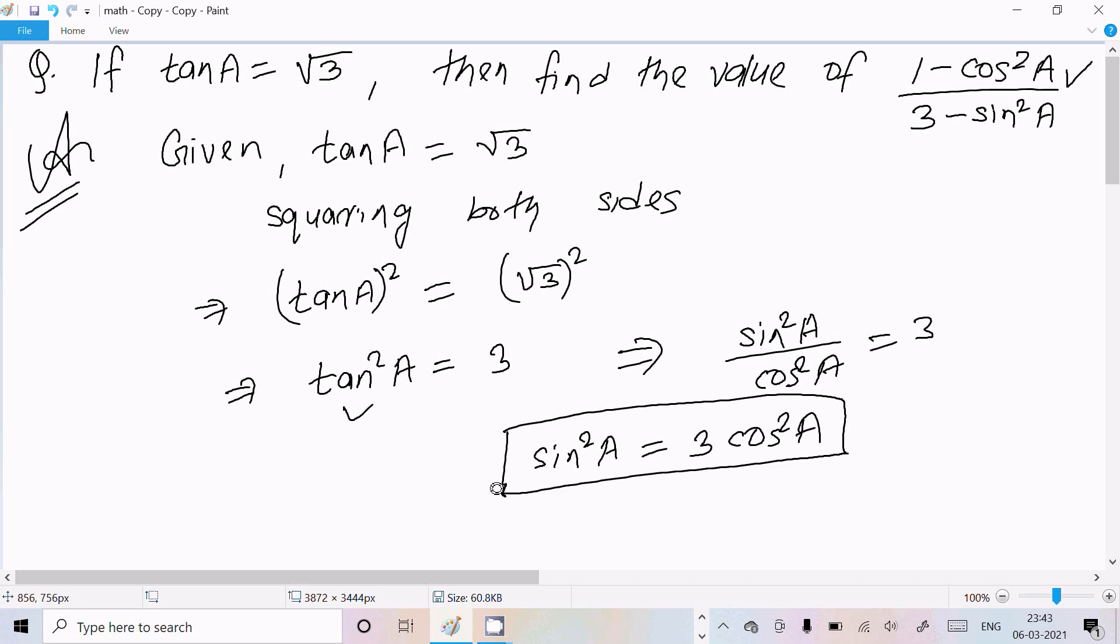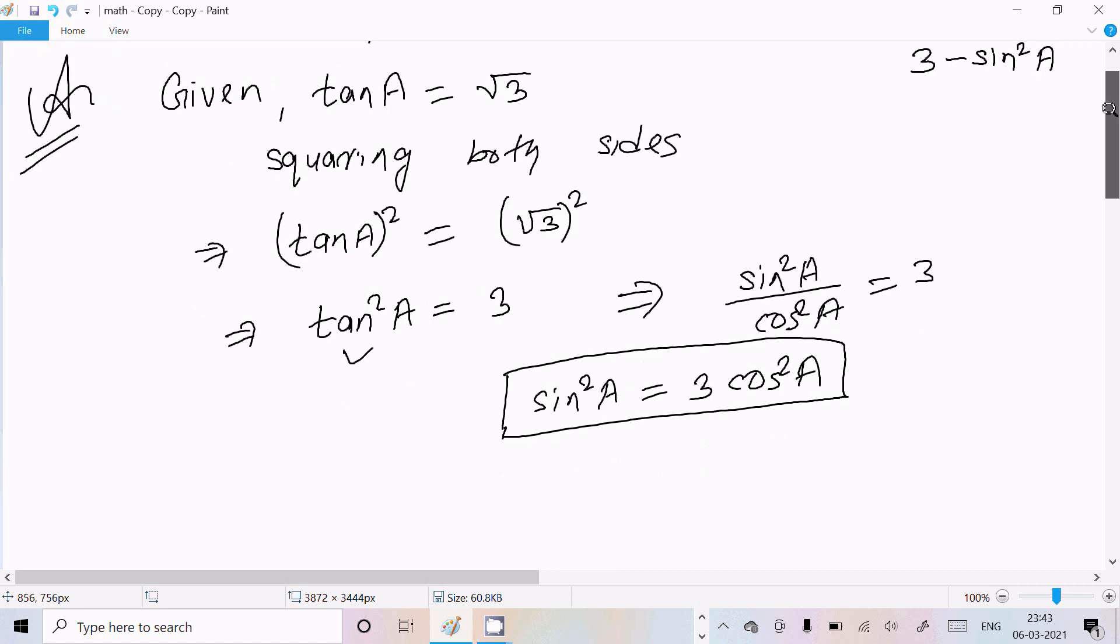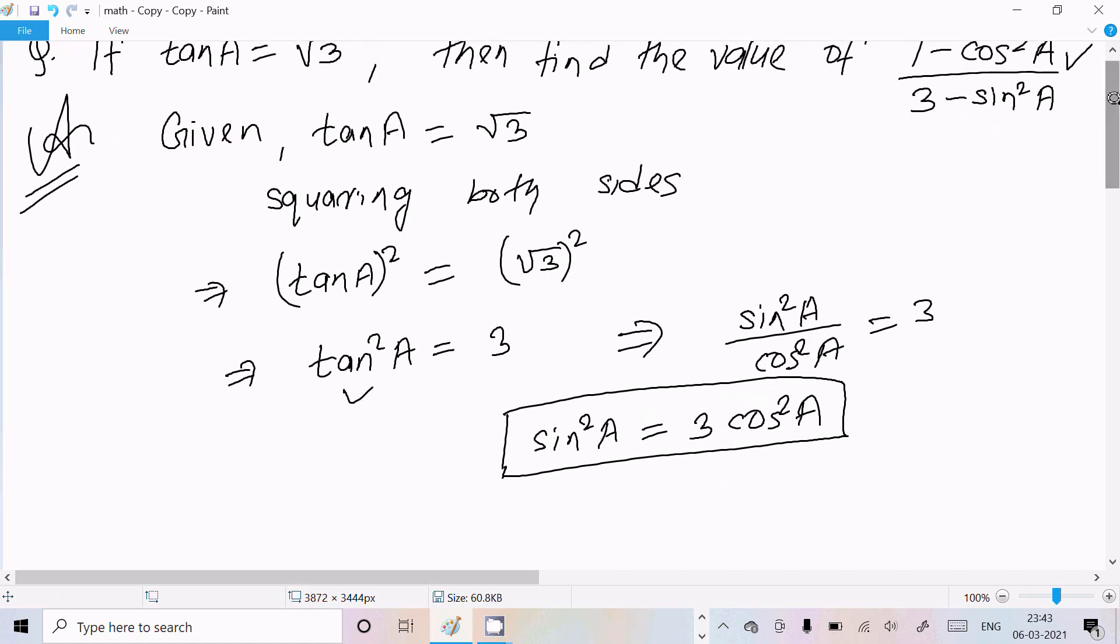Now we need to find the value: (1 - cos²A) / (3 - sin²A).